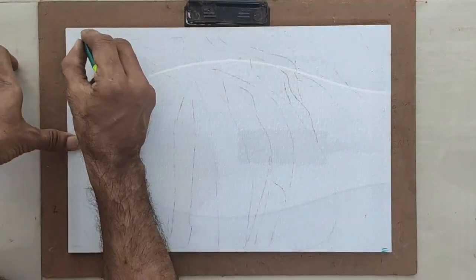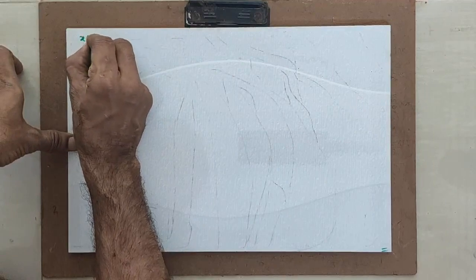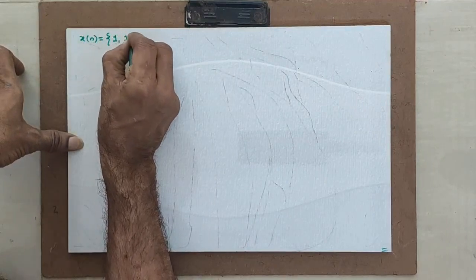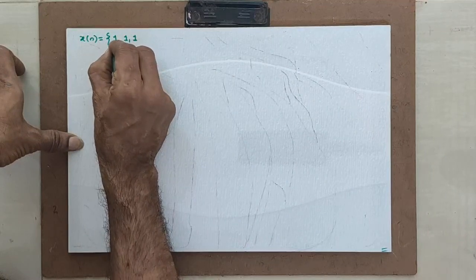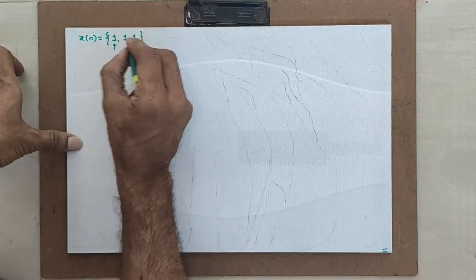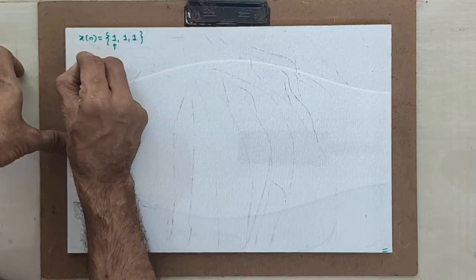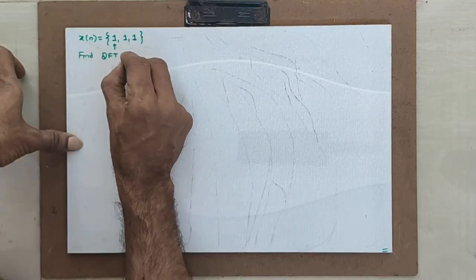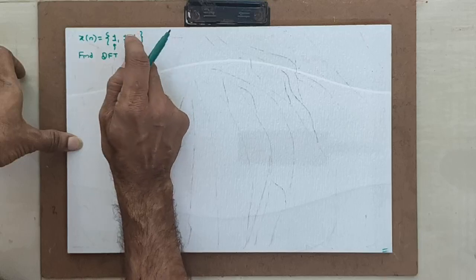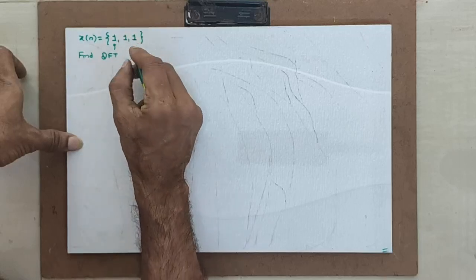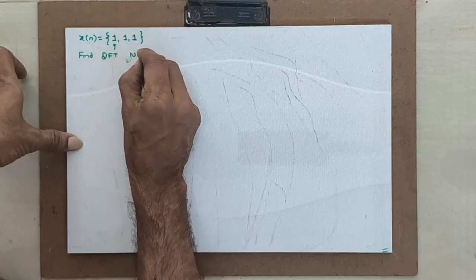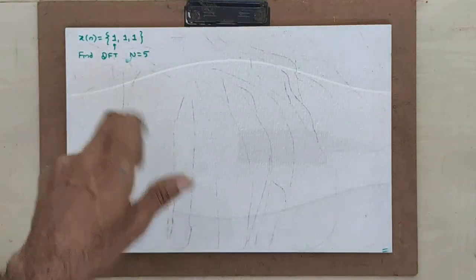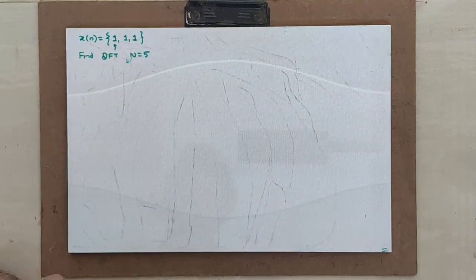I will take an example where x of n is given as 1, 1, 1. I will find the discrete Fourier transform for N equal to 5. This is an odd number — N equal to 5 is an odd number.